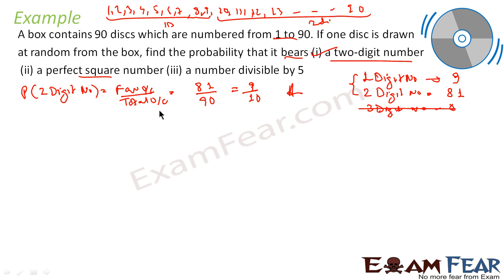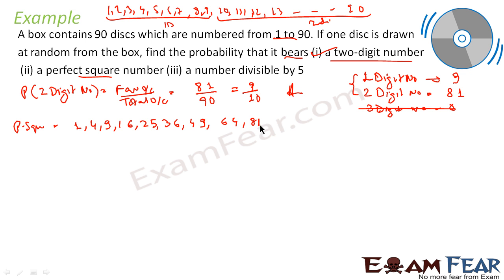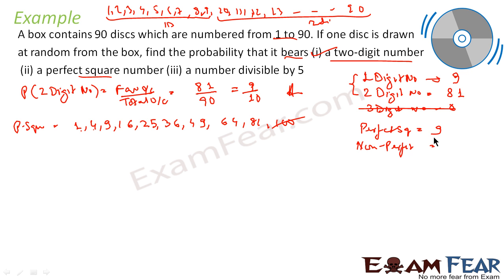Now find the probability that the number is a perfect square. Perfect squares from 1 to 90: 1, 4, 9, 16, 25, 36, 49, 64, 81. The next one, 10² = 100, is beyond 90 so it is excluded. That gives us 9 perfect square numbers. The remaining 90 − 9 = 81 are non-perfect squares.